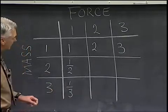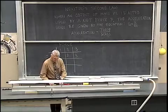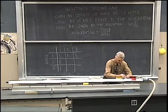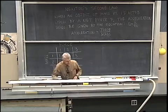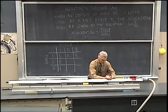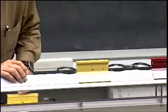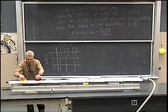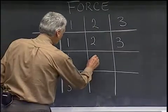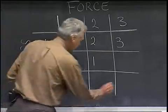Now it gets a little more interesting when we take two units of force on two units of mass. What would you expect to get there? Let's try it and see. We'll take two units of mass — two cars coupled together — and apply two units of force and measure the acceleration. You've probably guessed what this would be. We find we're back to our original one unit of acceleration. So with two units of force on two units of mass, we get one unit of acceleration. You would probably expect that three units of force on three units of mass would also give one unit of acceleration.